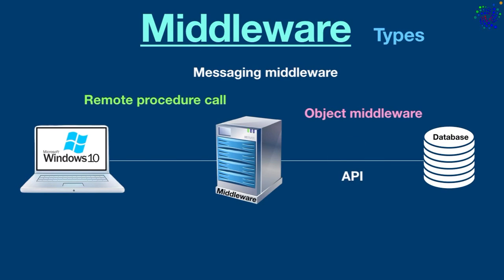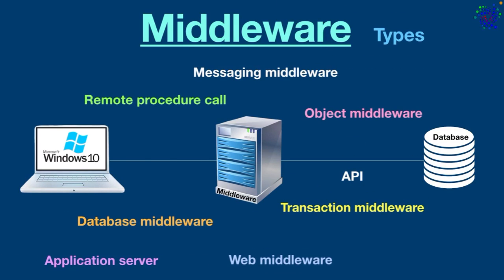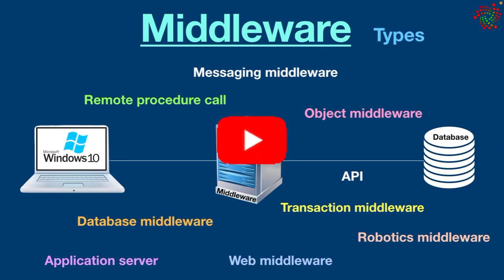These are the most common types of middleware. In a nutshell, middleware ensures that all systems in a company communicate with one another through the exchange of data. Middleware platforms and systems make it possible to link several applications and systems simultaneously. That wraps up today's video — I hope you understood what was explained. If you did, please hit the subscribe button.